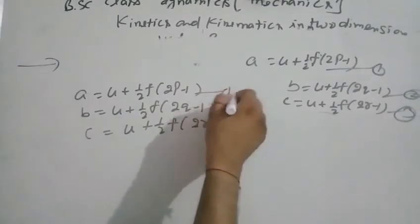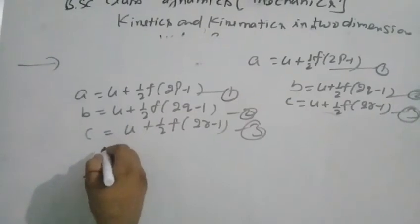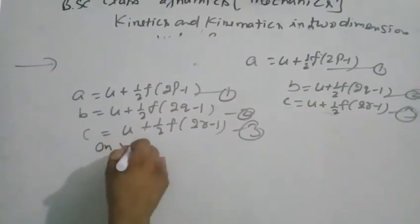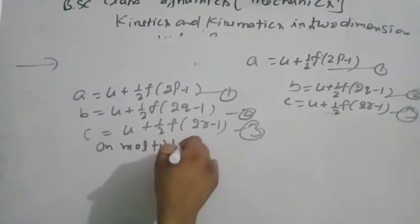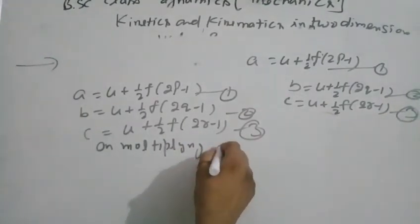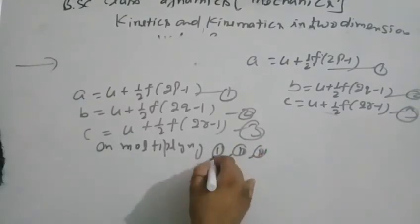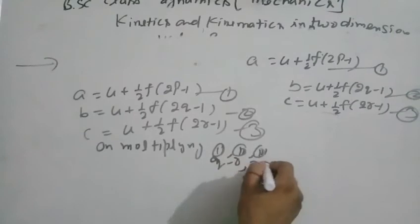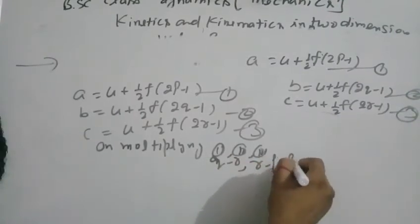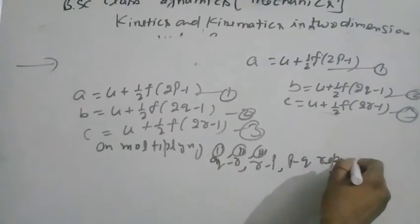Multiplying equation first, second, and third by (q minus r), (r minus p), and (p minus q) respectively, and then adding.